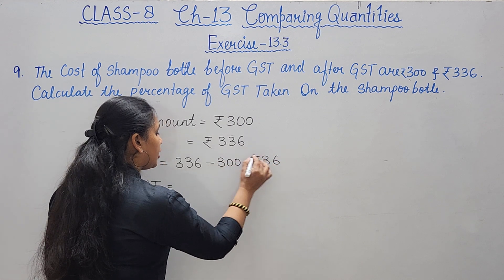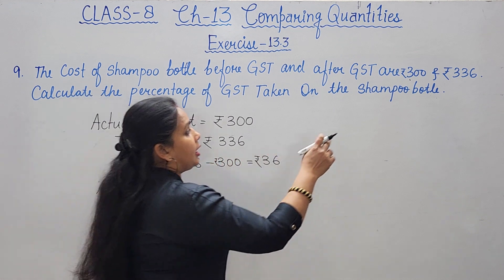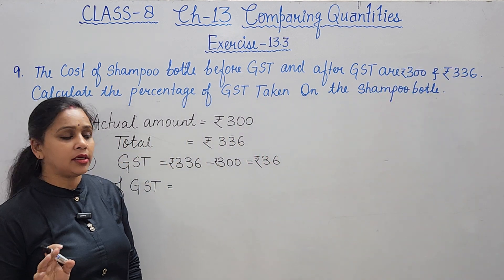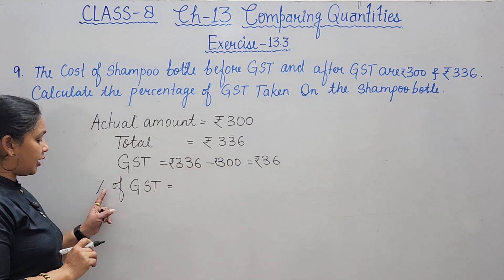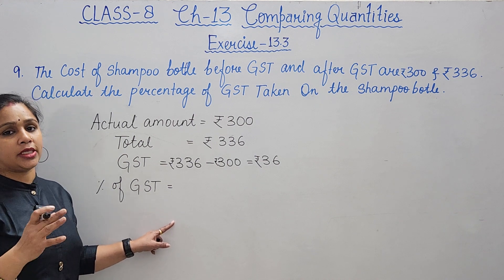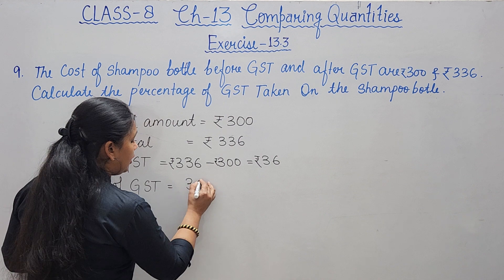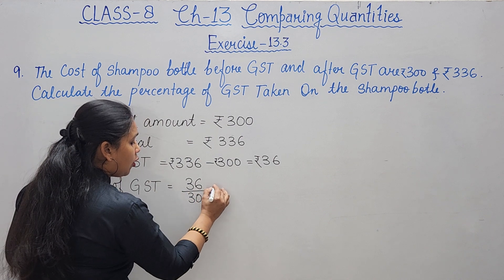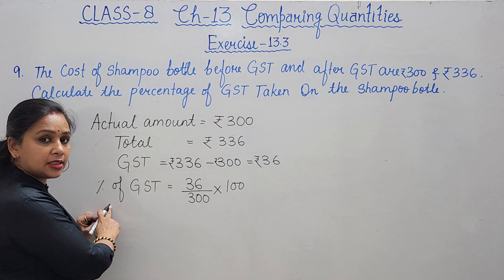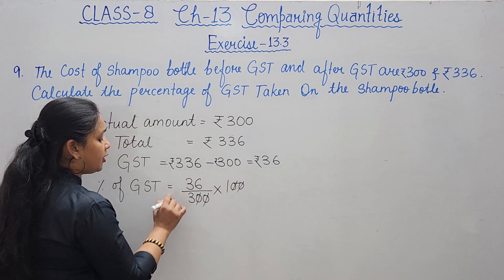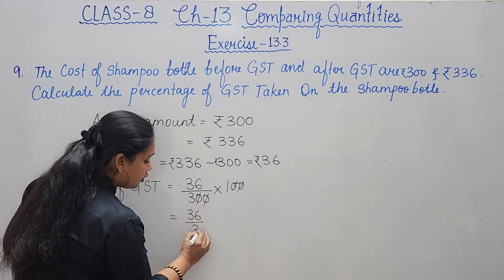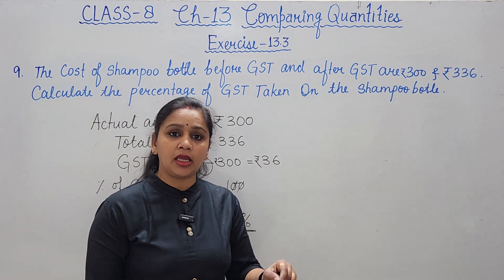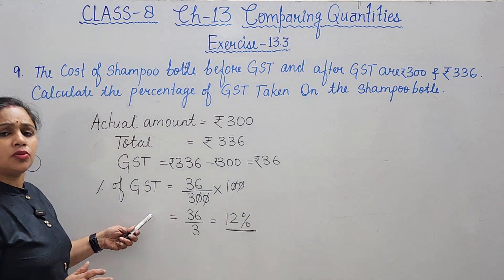GST paid = 36 rupees on a bottle of 300 rupees. Formula: GST% = (GST amount / original price) × 100 = (36/300) × 100. Cancel 3 from 36 and 300: 12/100 × 100 = 12%. So GST percentage on the shampoo bottle is 12%. Question was very easy.